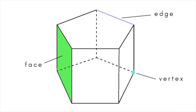Every polyhedron in three-dimensional space consists of two-dimensional faces, one-dimensional edges, and zero-dimensional vertices or corners.